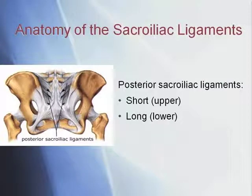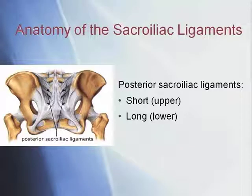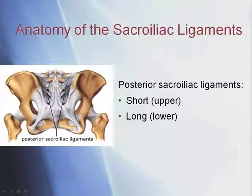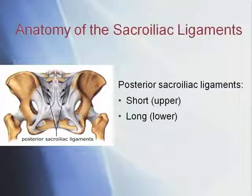The upper fibers are referred to as the short posterior sacroiliac ligaments. These are at the top and are oriented in a fairly horizontal direction, passing from the first and second transverse tubercles — those bumps on the back of your sacrum — to the tuberosity of the ilium.